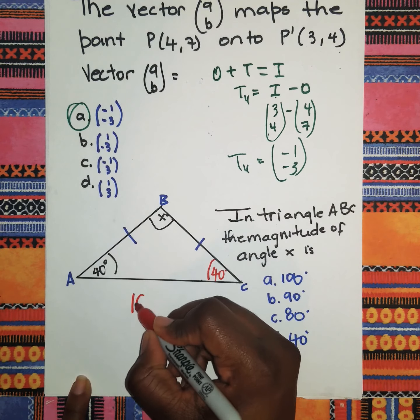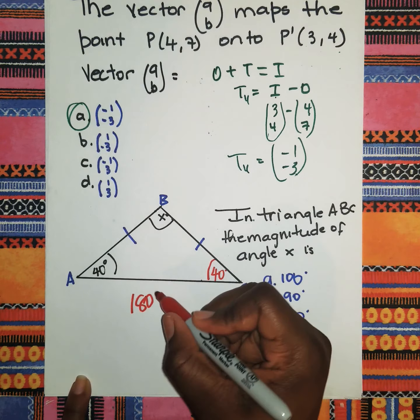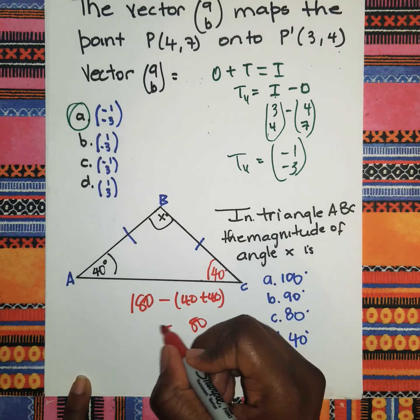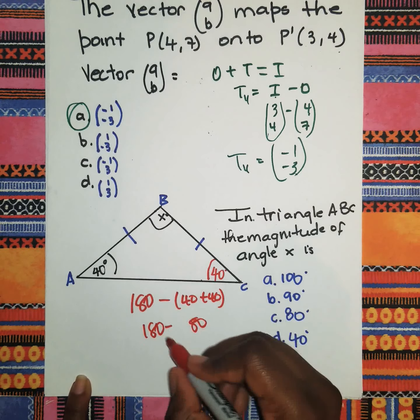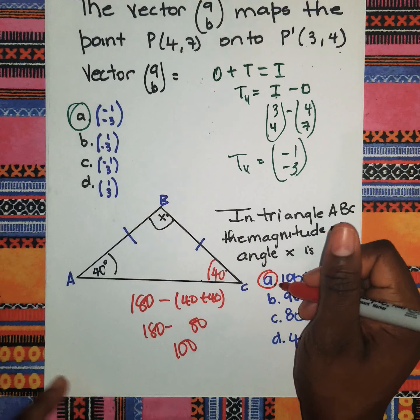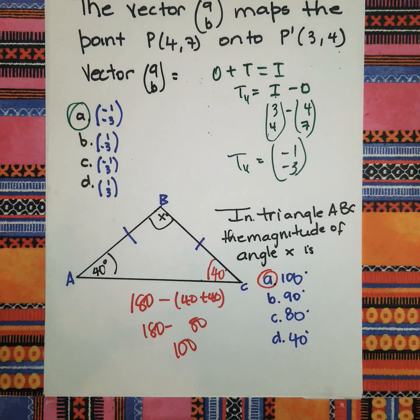If you're having these two angles as 40 and 40, angles in a triangle equal 180 degrees. So if you add these two, 40 plus 40 gives you 80, and 180 minus 80 will give you an angle of 100 degrees.